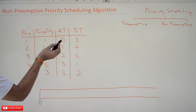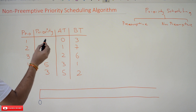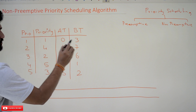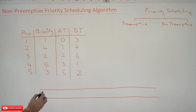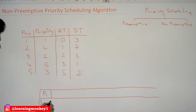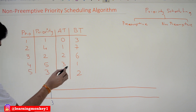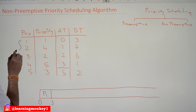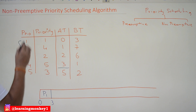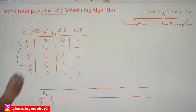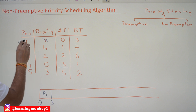At arrival time zero, the priority is one, and we have only one process, so process P1 will be scheduled. P1 has a burst time of three, so it will take three units of time. By the time three units of time have passed, processes P1, P2, P3, and P4 will all be in the ready queue. As P1 has been executed, its execution is done, and we are left with P2, P3, and P4.